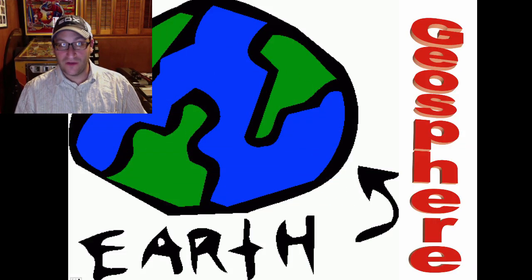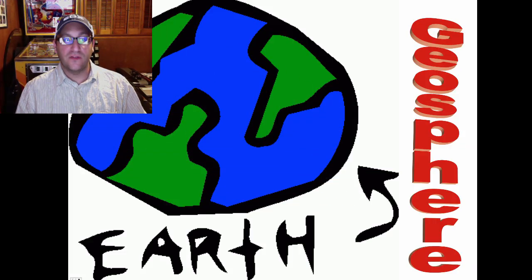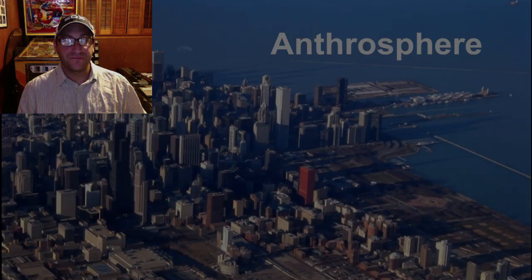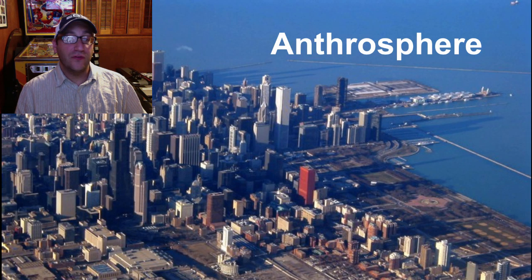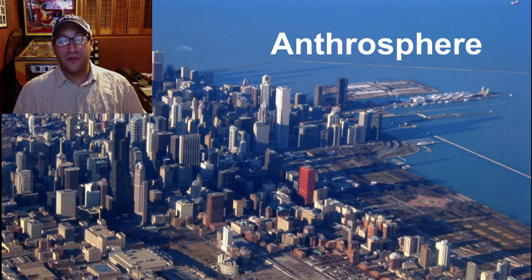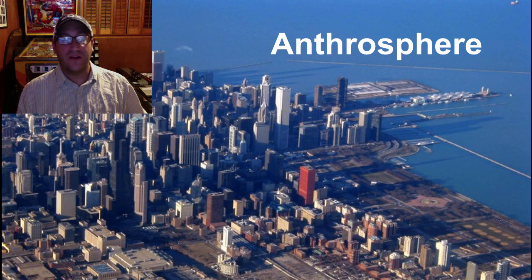Next, we have the geosphere. Geo means rock, so this is the sphere of rock. This is simply the rocky surface or all the rocky parts of earth, including its interior. Next, we have the anthrosphere. Anthrosphere is the new sphere of earth. It's how we interact with the earth. It's our culture, our buildings, all the things that we do and how they affect the earth. It's basically the people.